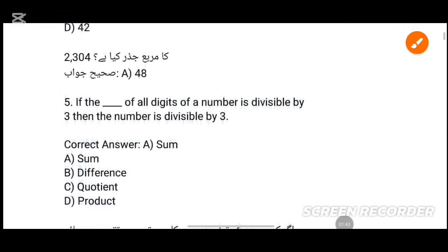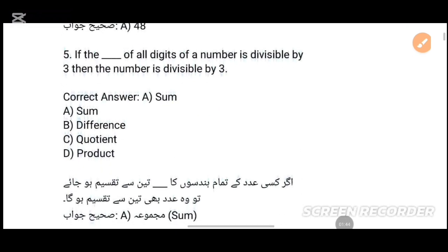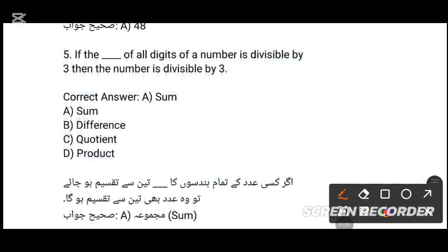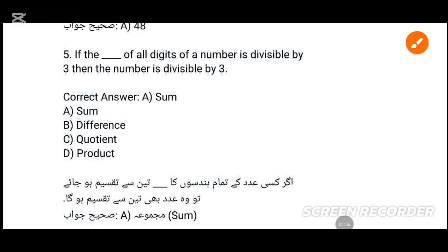MCQs number 5: If the sum of digits of a number is divisible by 3, then the number is divisible by dash. The answer: the sum of digits of the number is divisible by 3 — option A.